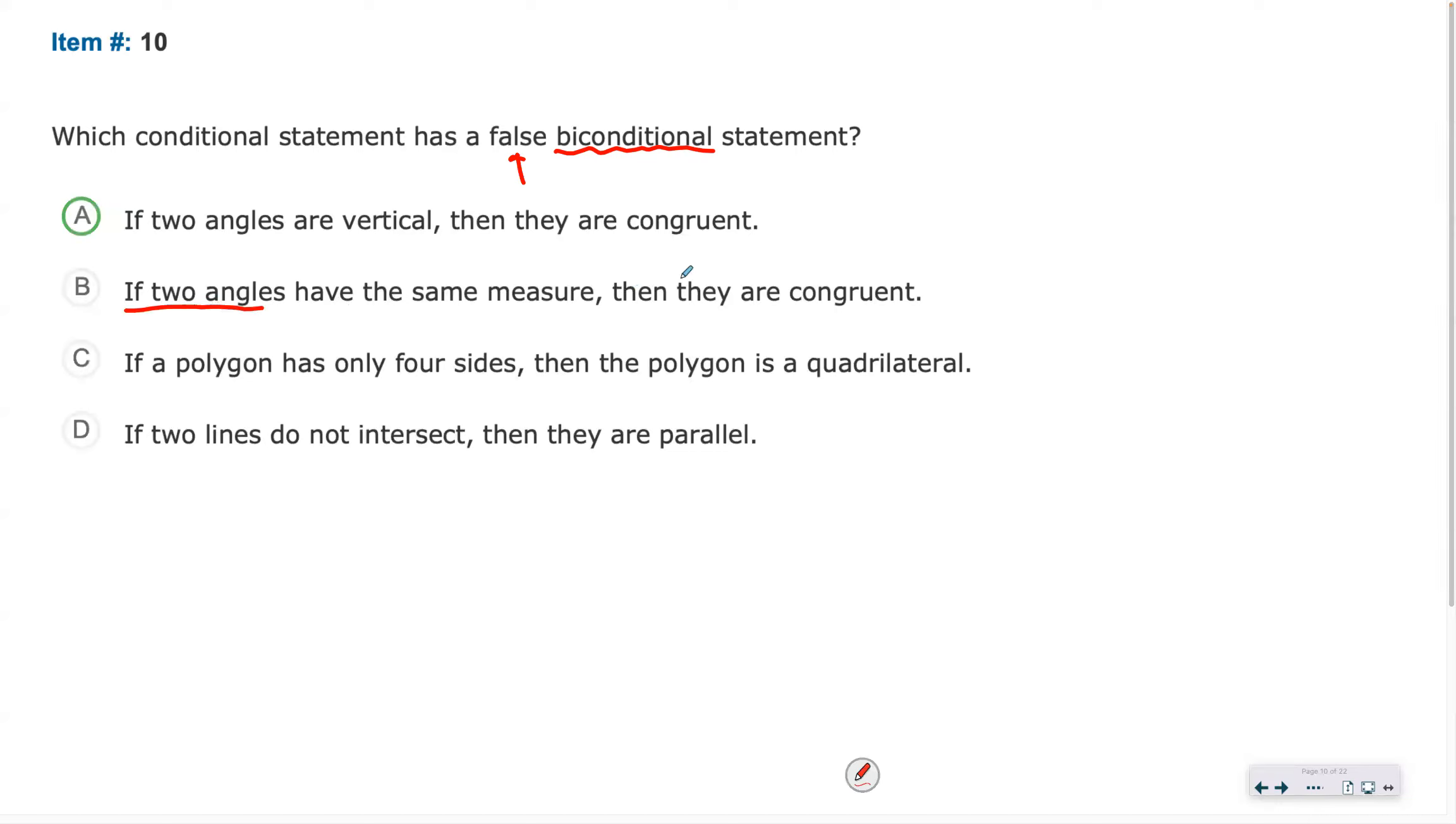If two angles have the same measure, this time we'll switch it. If two angles are congruent, what does it mean if they are congruent? They have the same measure. So that would be true no matter what. That's true no matter which way you go.